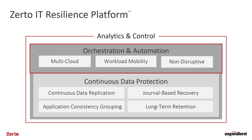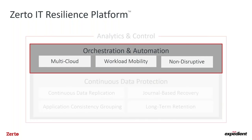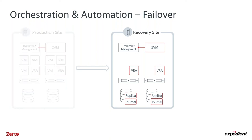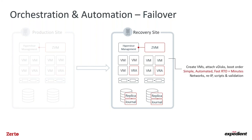Automation and orchestration are key. We have the engine that moves the data and the journal that lets you go back in time. For the failover workflow: in a typical environment with a production site and Expedient as the recovery site, when you click the failover button you select what to fail over — your entire site, an application, or a VM. Zerto then brings up VMs on the target side, attaches the disks, boots them in the right order, and assigns new IP addresses if necessary. It's all automated and pre-defined.